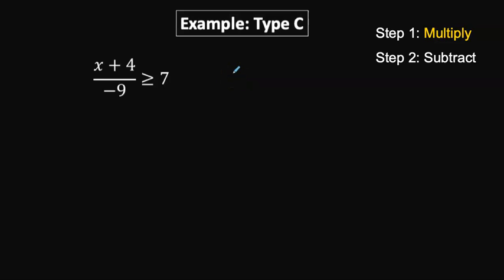In this video, I'm going to solve a type C inequality one way. The way we're going to do it is we're going to multiply first and then we're going to subtract.